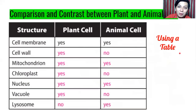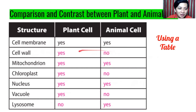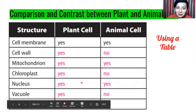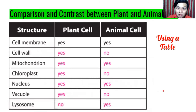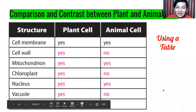If you use a table, we have structure, plant cells, and animal cells columns. Cell membrane — both yes. Cell wall — plant cell yes, animal cell no. Mitochondria — both yes. Chloroplast — yes in plant cell, no in animal cell. Nucleus — both yes. Vacuole — plant cell has a large vacuole; animal cell sometimes has no vacuole or a small one. Lysosome — no lysosome in plant cells, but there is a lysosome in animal cells. Those are the differences between plant and animal cells.